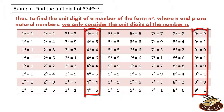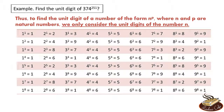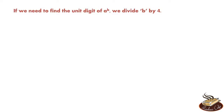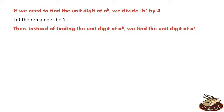For 4 and 9 the cyclicity is 2, but let's learn a general rule with a cyclicity of 4. Since the unit digit repeats in a cycle of 4, we divide the power by 4. If we need to find the unit digit of a^b, we divide b by 4 and let the remainder be r. Then instead of finding the unit digit of a^b, we find the unit digit of a^r — the answer will be the same. Note that r can be 0, 1, 2, or 3.